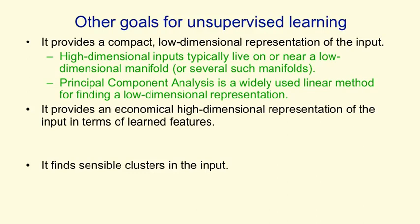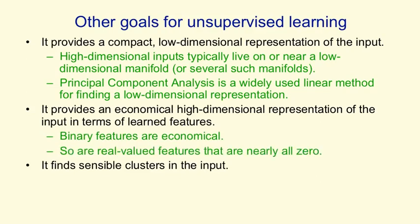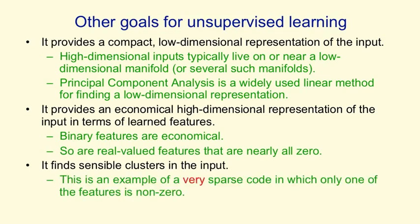Another goal for unsupervised learning is to provide an economical representation of the input in terms of learned features. If we can represent the input in terms of binary features, that's typically economical because it only takes one bit to state a binary feature. Alternatively, we could use a large number of real-valued features but insist that for each input, almost all of those features are exactly zero — in that case, we only need to represent a few real numbers per input, and that's economical. Another goal is to find clusters in the input, and clustering can be viewed as a very sparse code.